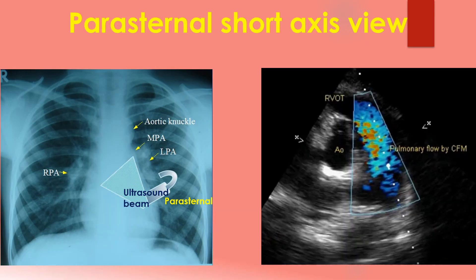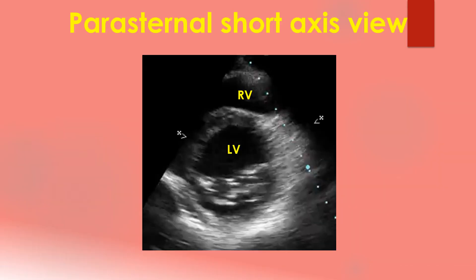The parasternal short axis view is obtained by rotating the transducer almost at right angles in the same location so that the echo beam is perpendicular to the base-apex axis of the heart. Three cuts are usually obtained. The aorta, right ventricular outflow tract and pulmonary artery up to its bifurcation are imaged in the upward angulation shown in the left panel. Slight downward angulation gives the left ventricular cross section with mitral valve cross section within. The right ventricular cavity is elliptical and the left ventricular cavity is circular in this view. Wall motion of the left ventricle can also be assessed, and planimetry of mitral valve area can be obtained in cases of mitral stenosis.